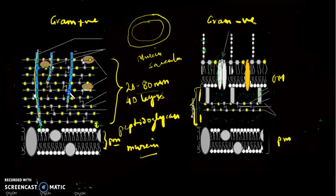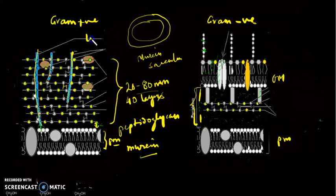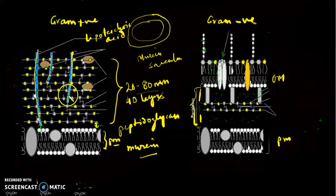Gram positive bacteria, other than having this peptidoglycan layer, also contain these polysaccharide-like structures known as teichoic acids. The one that is linked with the phospholipid is called lipoteichoic acid, and the one that is linked with the murein is called murein teichoic acid, or simply teichoic acid.